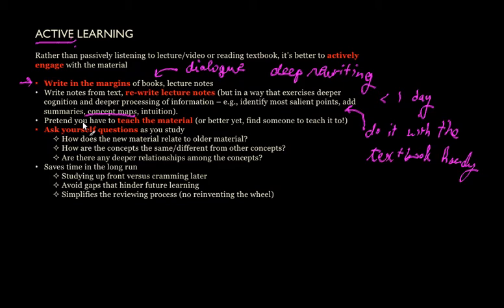Another thing you can do is pretend, as you're reading material, that you have to teach it to somebody else. Imagine you're doing it for somebody who doesn't know as much as you do — that's a really good way to improve your learning. In an ideal world, if you can actually find a guinea pig to explain something to, that's a really powerful thing. If you can't explain something, then there's likely something you don't understand yourself. When you try to explain something, you effectively ensure there are no holes in your understanding, because you'll find those holes as you try to explain it. Moreover, in the process of explaining something to somebody else, you'll identify salient points, core ideas, and intuition — that's really critical for deeper learning.